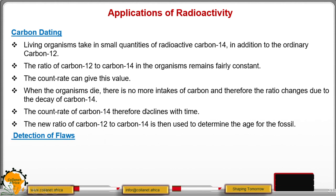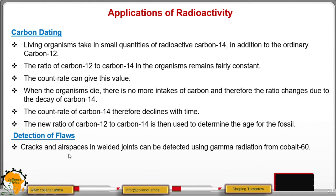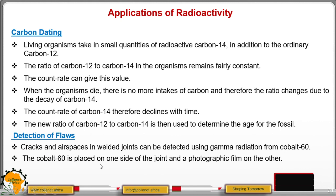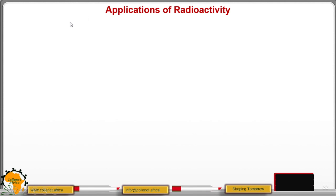Another application is the detection of flaws. Cracks and air spaces in welded joints can be detected using gamma radiation from Cobalt-60. The Cobalt-60 is placed on one side of the joint, and a detector — a photographic film — is placed on the other side. If the photographic film is blackened, you will know there is an air space or a crack allowing those radiations to pass.